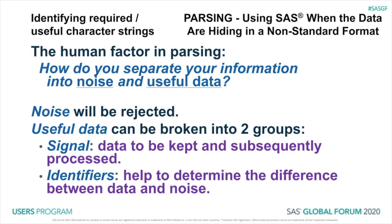We are going to have to do some human analysis first. We have to determine what in our file is considered noise and what is considered useful data. A lot of people use the word signal, and I'm going to use the word signal here as well to represent the data that we want to keep. However, I also want to point out that we have identifiers. Identifiers help to determine the difference between data and noise. This is what's going to tell us where does our signal start and where does our signal end.